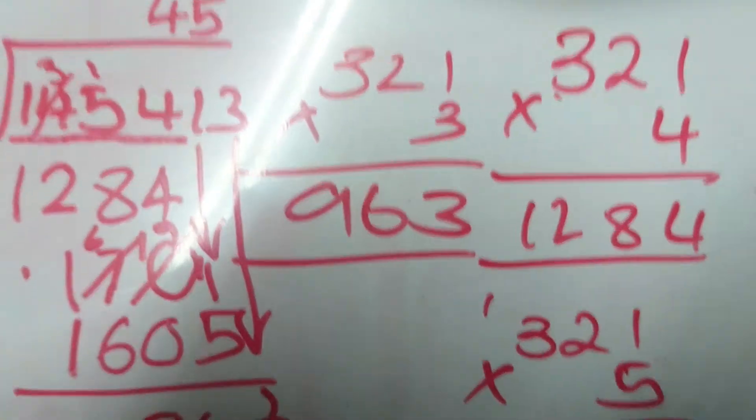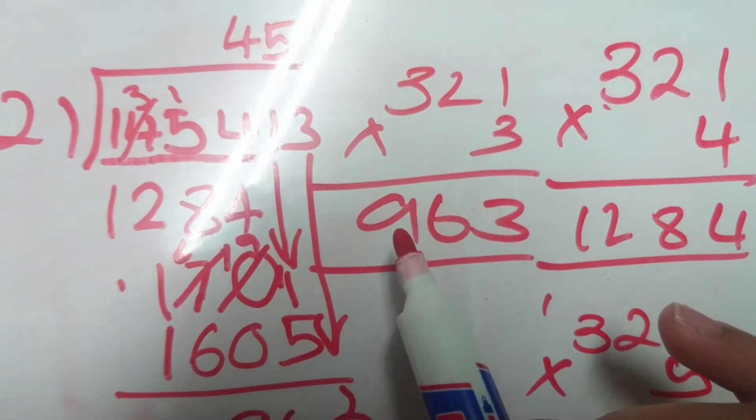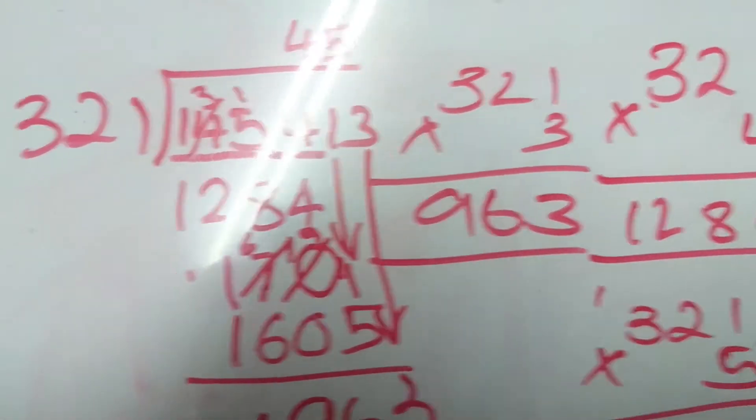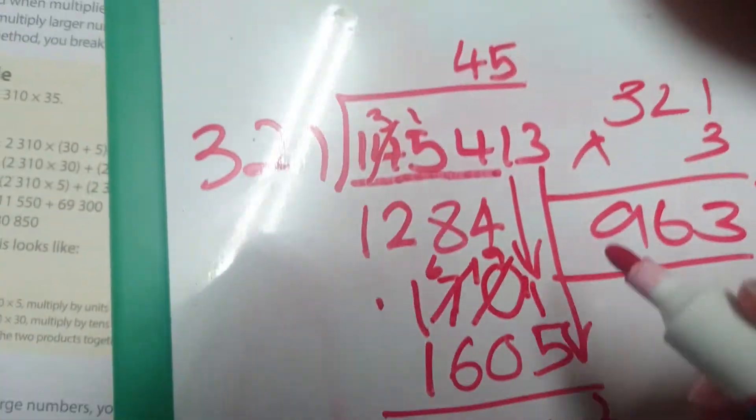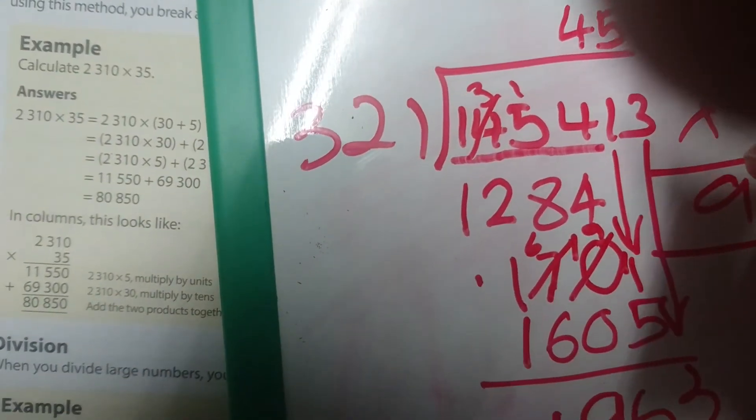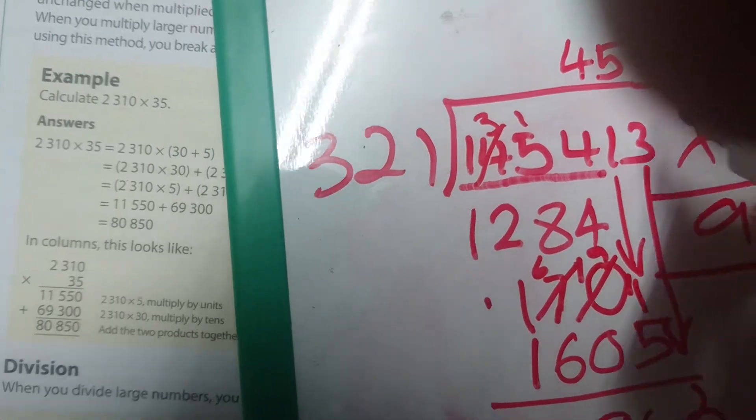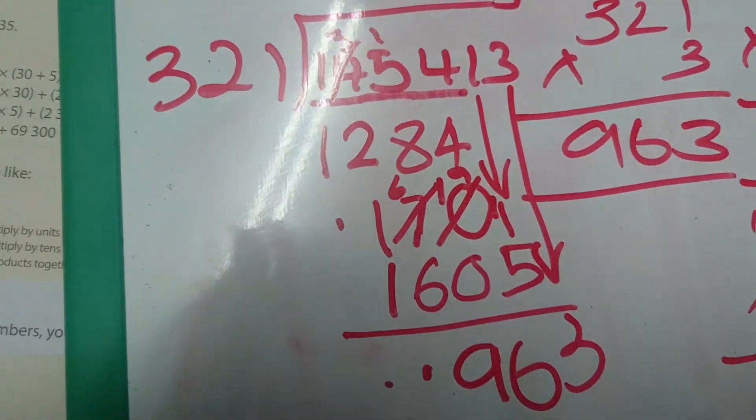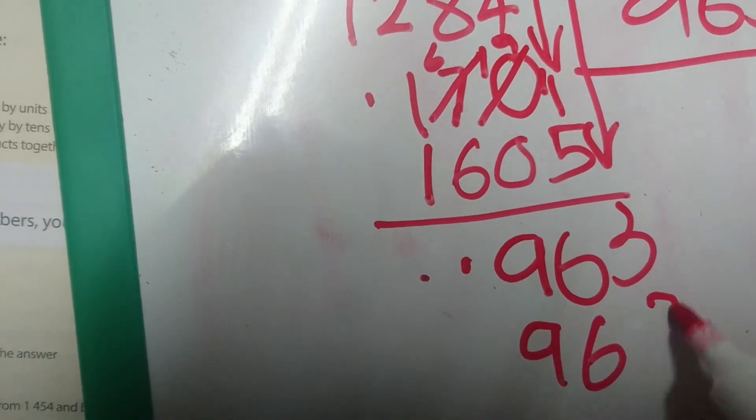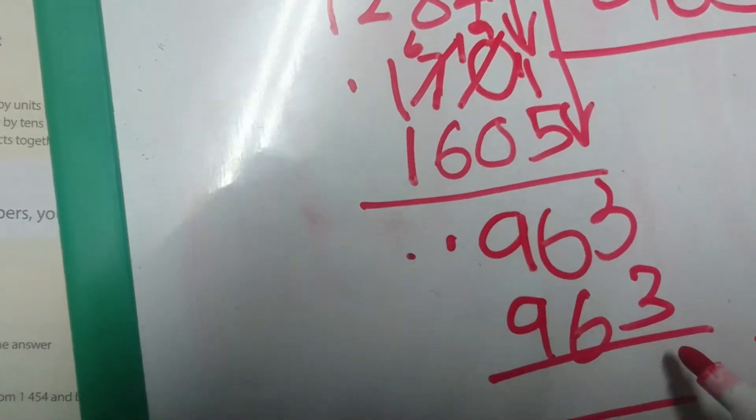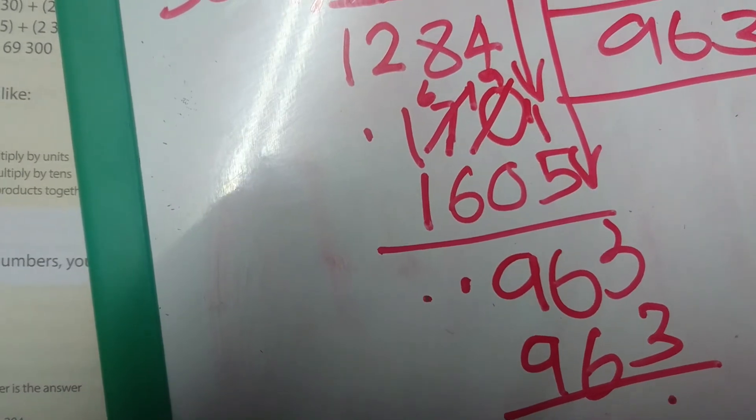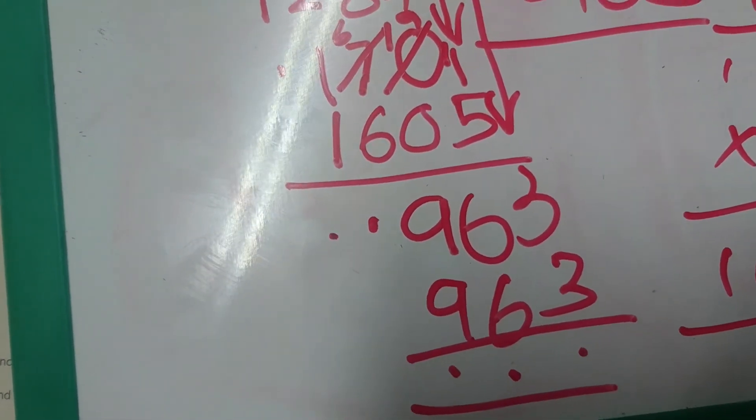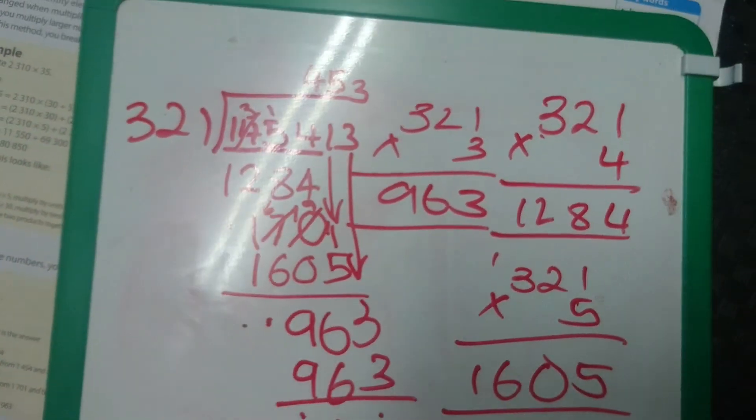How many times can 321 go into 963? If you look at this division board, 321 times 3 equals 963. So it goes into this number exactly 3 times. We are going to put down our 3 here on top and we are going to write the number down. 963. We then minus the 2 numbers from each other. We will get 0 for all of it, and that tells us that there is no remainder.